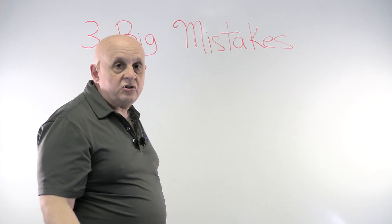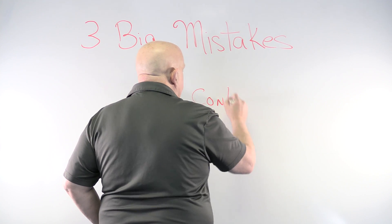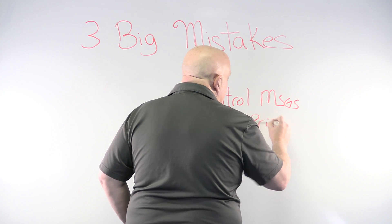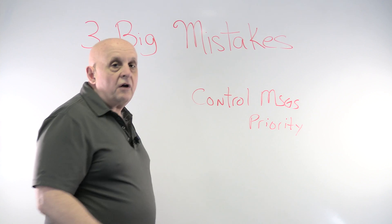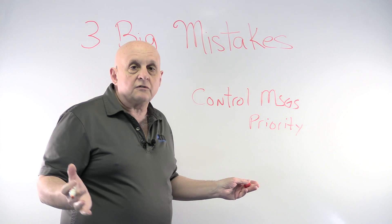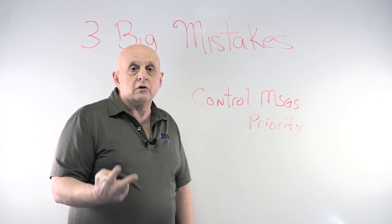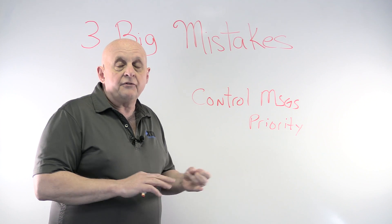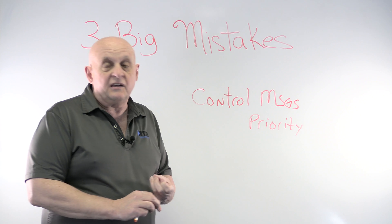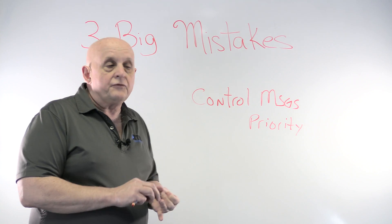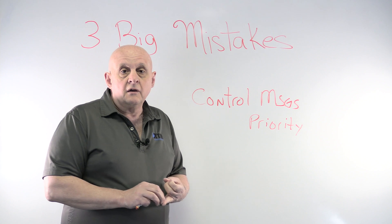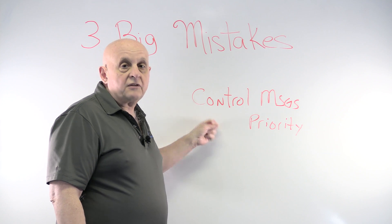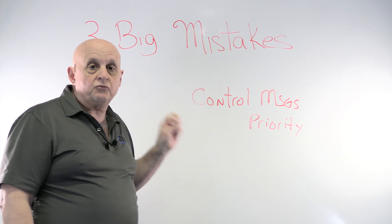Mistake number two is not giving control messages priority. Control messages need to get priority all the time, no matter what. Generally you need two priorities on an Ethernet IP network: your control messages get the highest priority, everything else gets a lower priority. If you have IoT traffic or any cyclic traffic on the network, that has to be subjugated so that control messages get through before anything else.